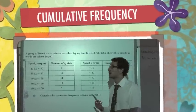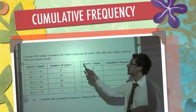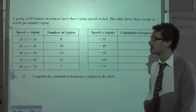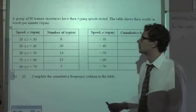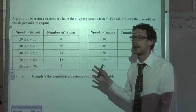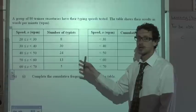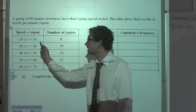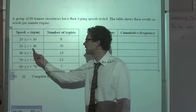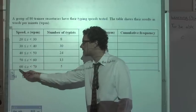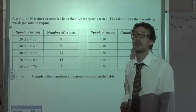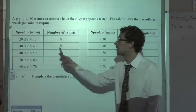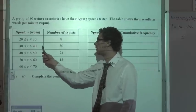Here I have a past paper question. A group of 80 trainee secretaries have their typing speeds tested. The table shows their results in words per minute — basically how many words they could type in a minute. We notice the groups are all of equal width, so we need to do a cumulative frequency curve rather than a histogram, which would be used when groups are unequal.